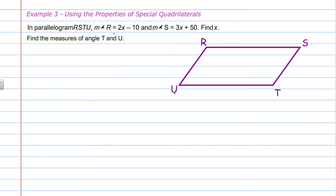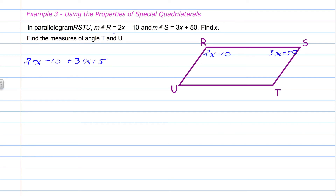Example 3: using the properties of special quadrilaterals. In parallelogram RSTU, the measure of angle R equals 2x minus 10 and the measure of angle S equals 3x plus 50. Find x, and find the measures of angle T and angle U. Angles R and S are supplementary because they are same side interior angles of two parallel lines crossed by a transversal — RS is the transversal and TS and UR are the parallel lines. So the equation to write is: 2x minus 10 plus 3x plus 50 equals 180.